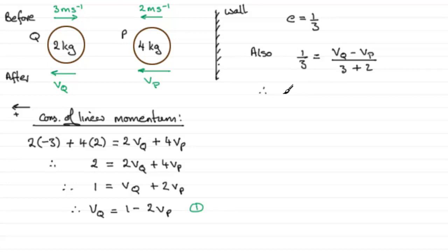And if we multiply both sides by 5, we get 5 thirds equals VQ minus VP. And if we now rearrange this, we won't rearrange it. I mean I could make VQ the subject. I think I'll substitute VQ directly into this. So we can say substitute equation 1 into equation 2.